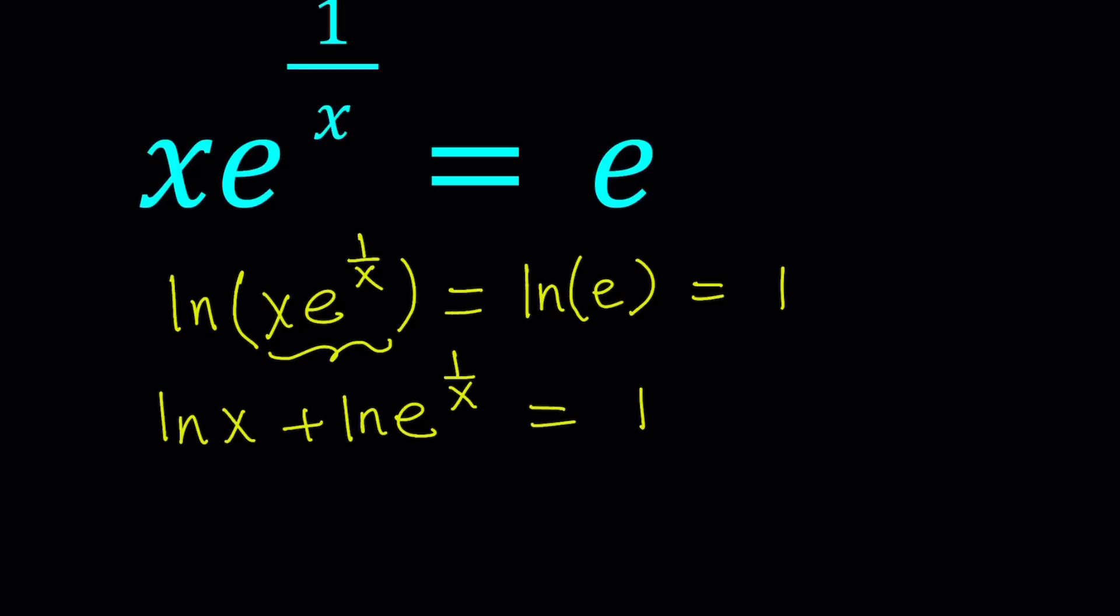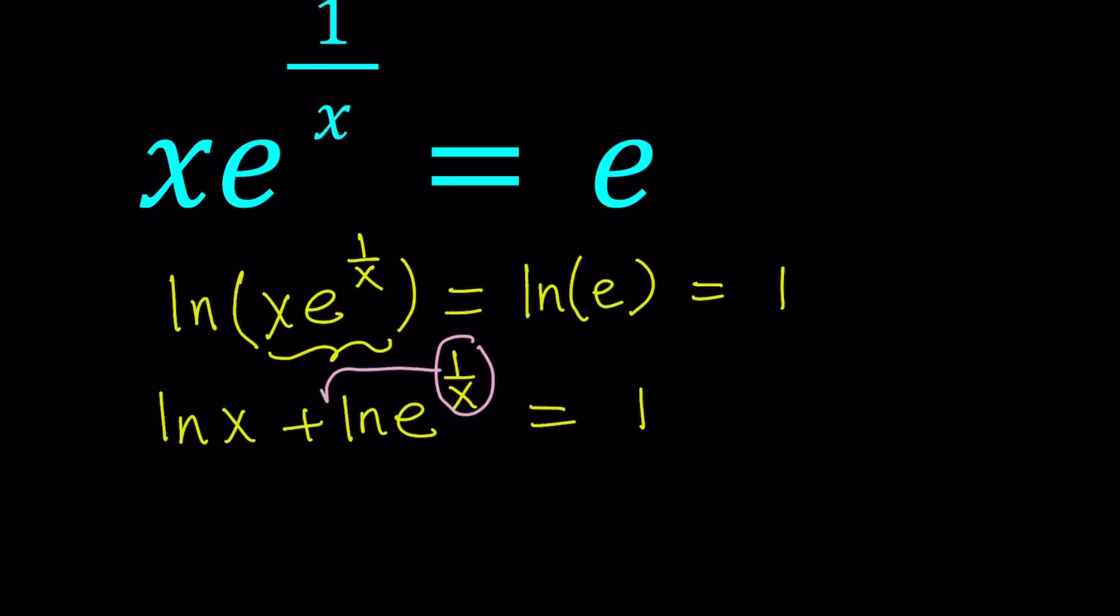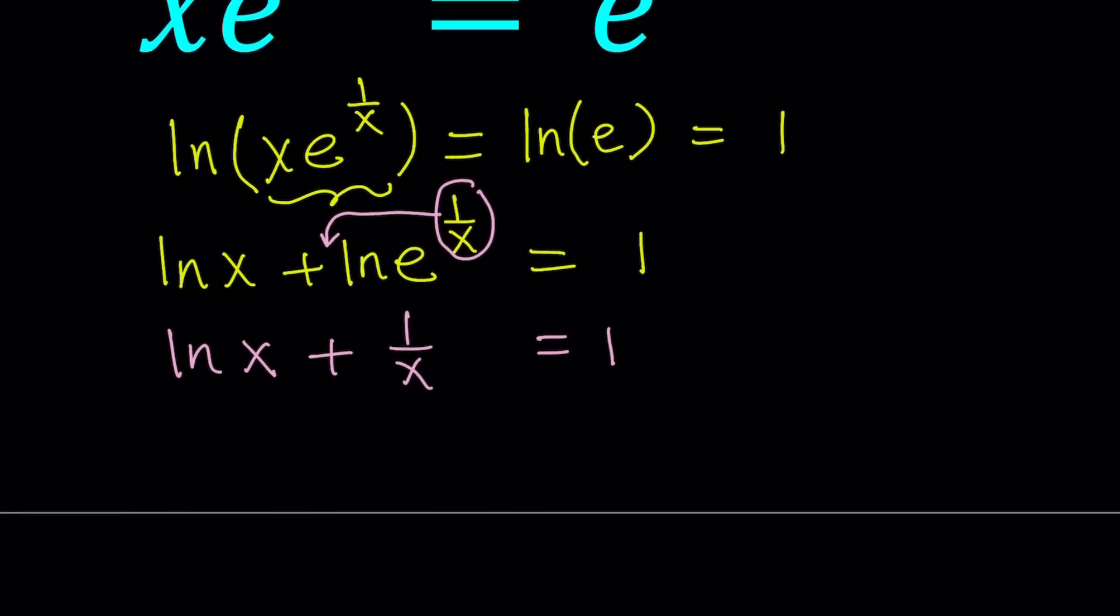And then one more time using the power property here, we can just go ahead and move this to the front. And using the fact that LN e equals 1, we can just write this as LN x plus 1 over x equals 1. I know you already guessed the answer and your guess is probably right. But I'm going to put it in a nicer form. At this point you could also make a guess to find the x values. I'd like to separate the 1 over x and 1 and LN x.